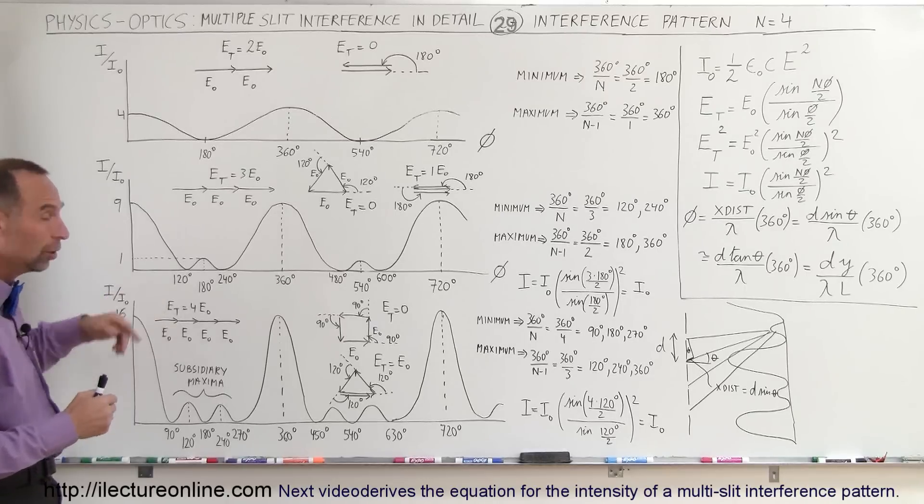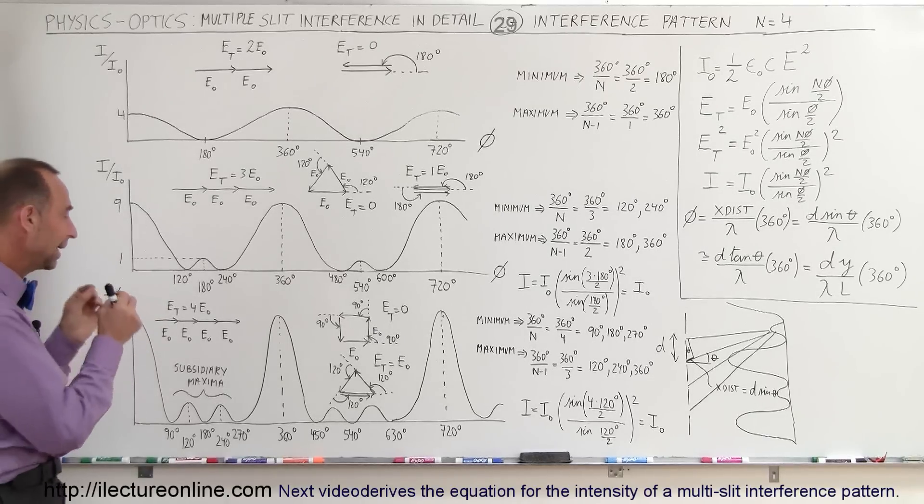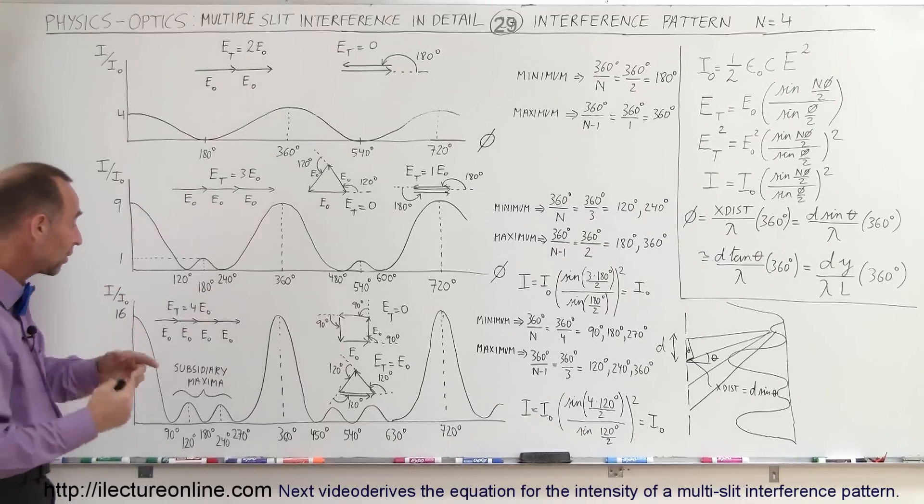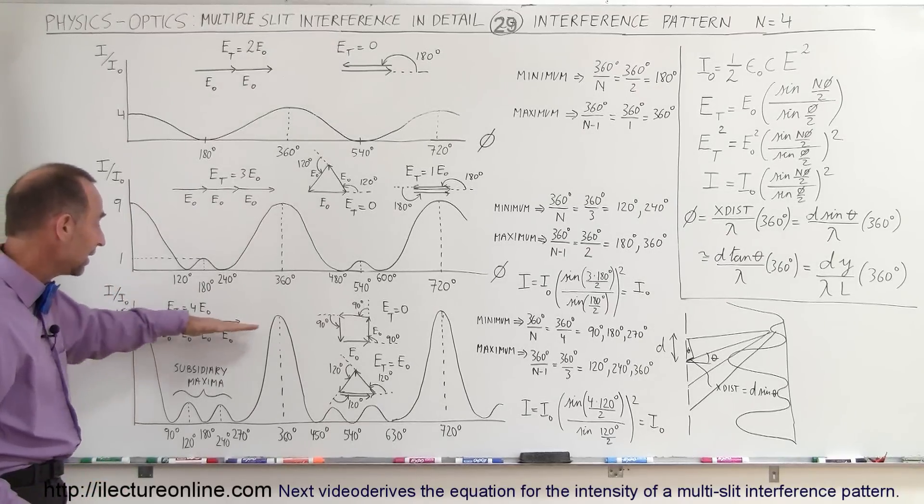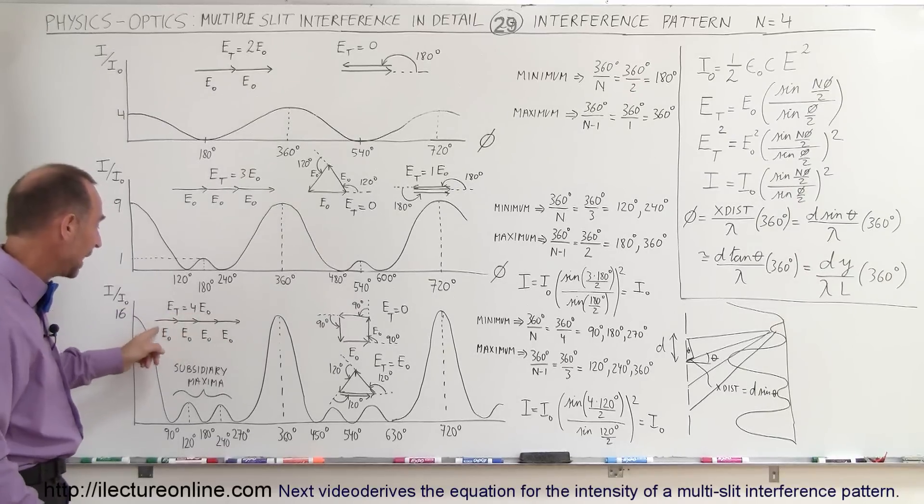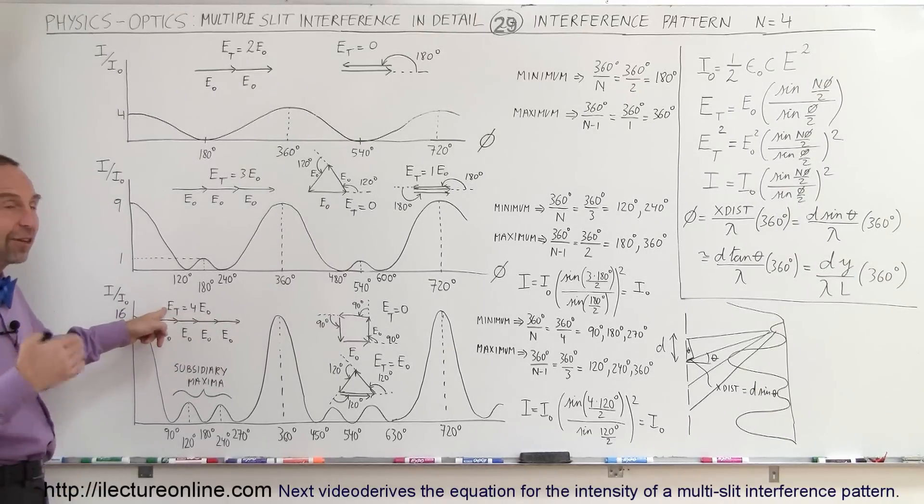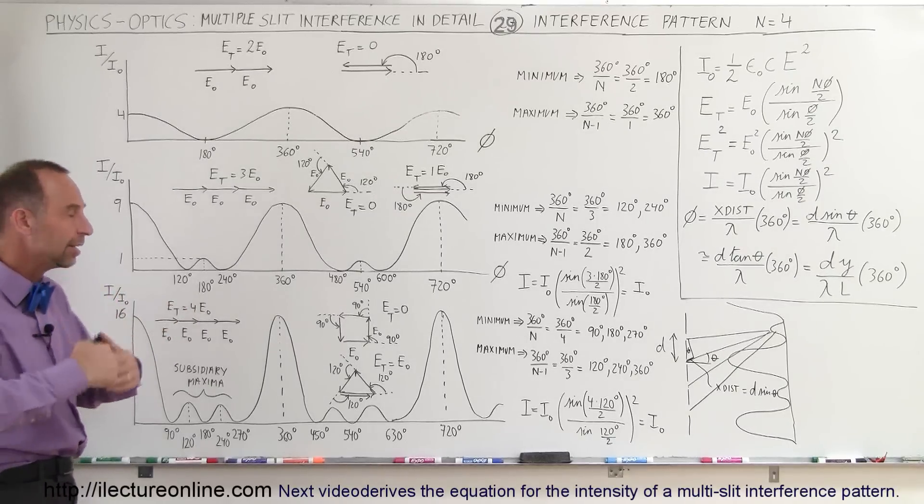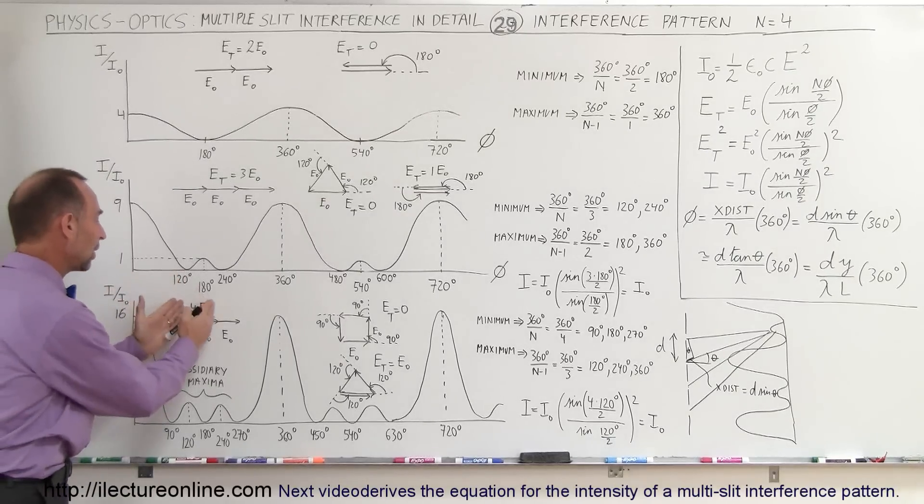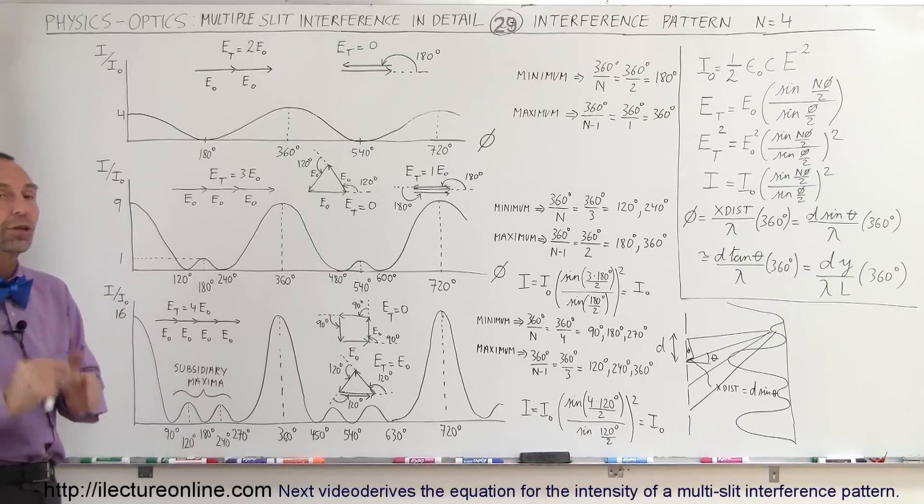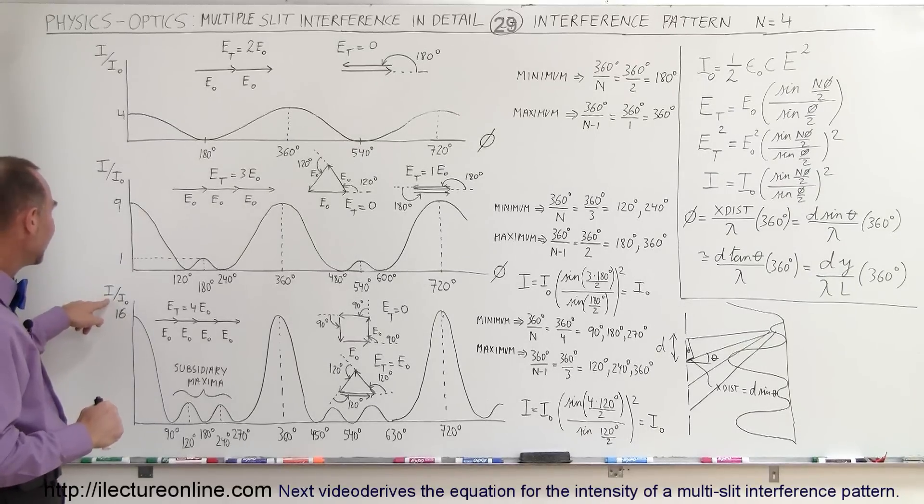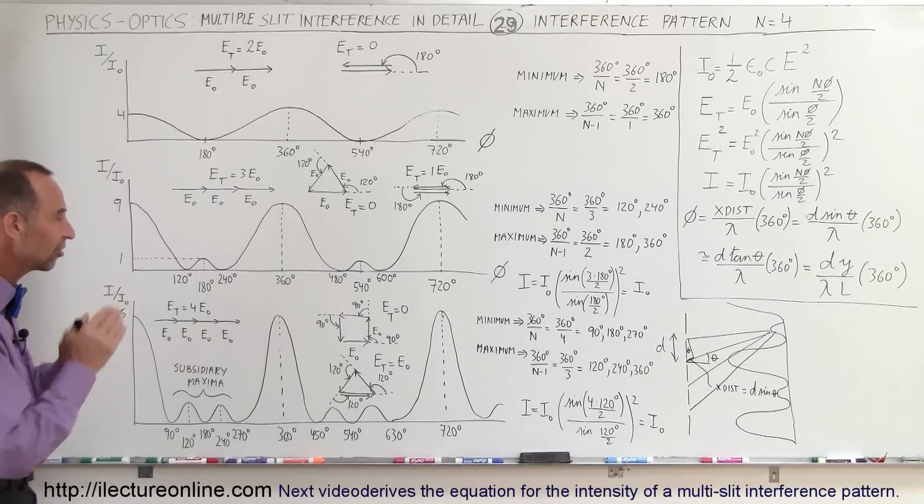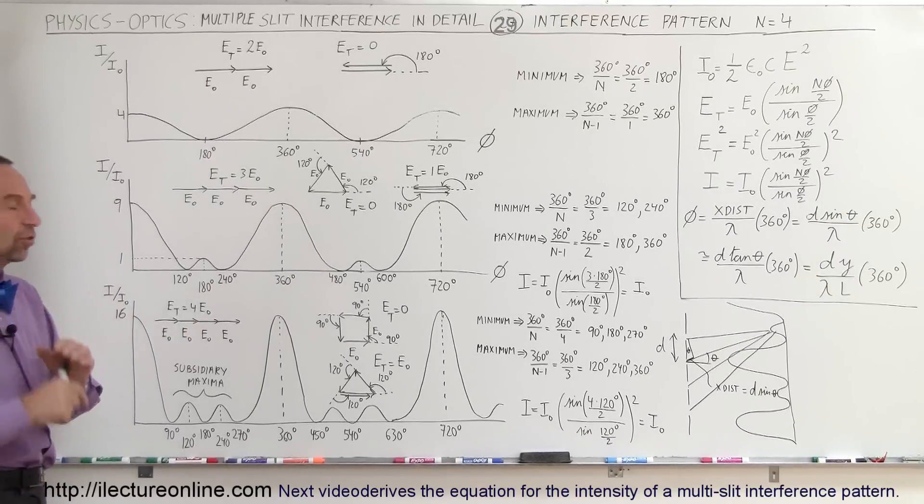The intensity is proportional to the total amplitude of the electric field oscillation squared. Since when they're all lined up, so when they're all in phase, they simply add up like vectors. The total electromagnetic field oscillation is equal to four times the electric field oscillation for a single one, and therefore the intensity is this quantity squared, or at least proportional to that quantity squared. So the intensity is 16 times the intensity of a single slit, the energy coming through a single slit.